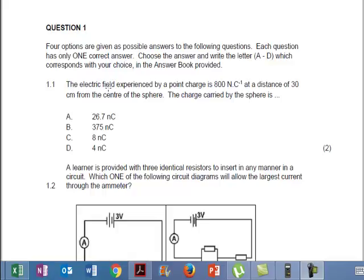So it says the electric field experienced by a point charge is 800 nanocoulombs. Let me just get a pen. It's 800 nanocoulombs. At a distance of 30 centimeters from the center of the sphere and it wants to know what is the charge carried by the sphere. So they want to know what is Q. You've got the distance, albeit in centimeters. And they tell you the electric field has a point charge, 800 nanocoulombs.